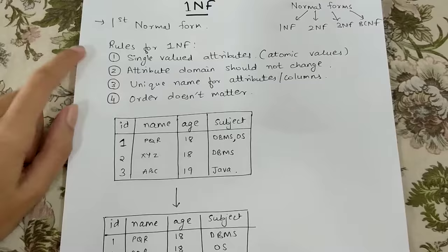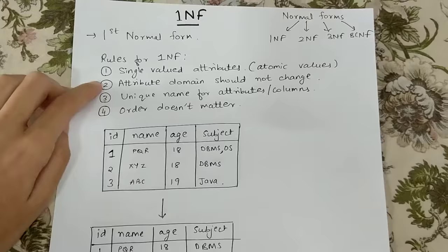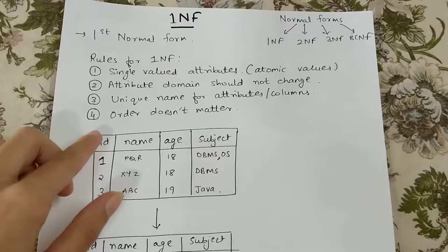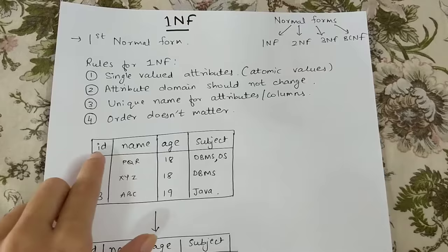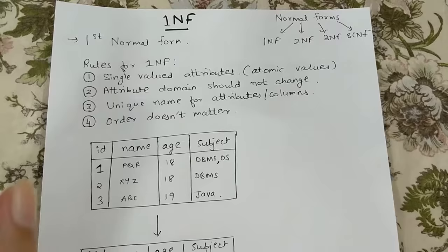The first rule is single-valued attributes, basically atomic values. Every column should have atomic values. What it means is that every cell should have only one value.